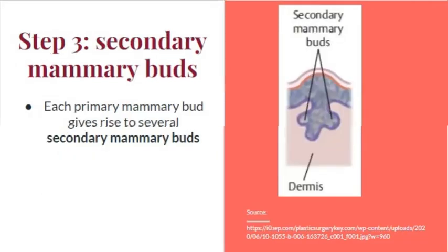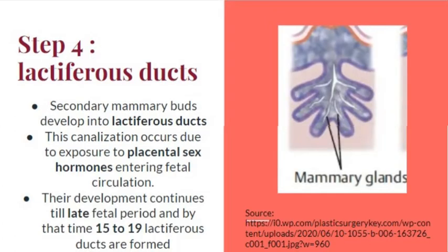Step 3 — formation of secondary mammary buds: each primary mammary bud gives rise to several secondary mammary buds. These are the branchings of the primary mammary bud inside the dermis, entering further into the dermis.